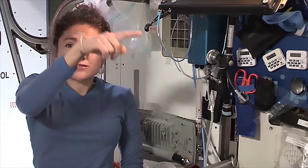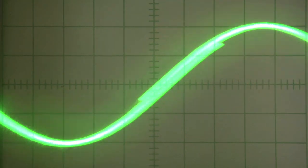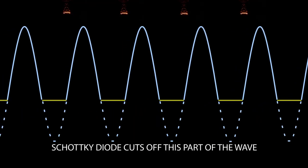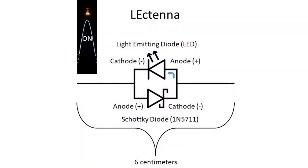Waves have peaks and troughs. These peaks and troughs correspond to how the wave distributes electrical charge in the LECTENNA. This charge imbalance then causes current to flow through the device, causing the LED to light up.